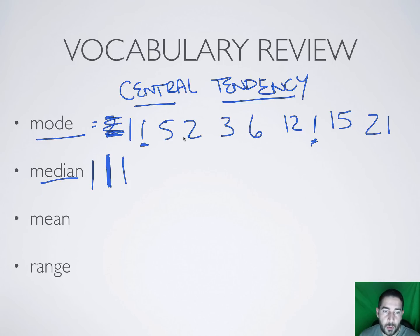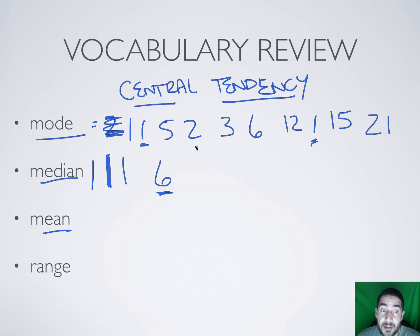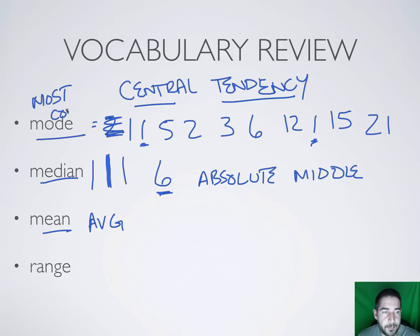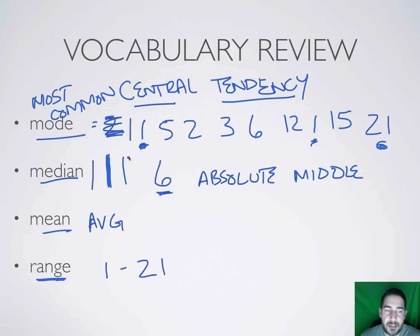The mean is what you've been doing since fourth grade: add all the numbers together and divide by the total count. So if you have 1 through 9, add them all together and divide by 9 — that's your mean, the average. The range is simply your lowest number to your highest number, so in our set the range is 1 to 21. Range just tells you what you're looking at — what could be the lowest and what could be the highest.